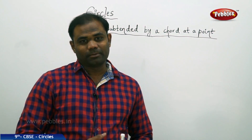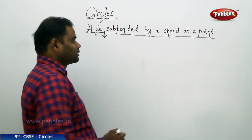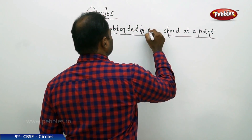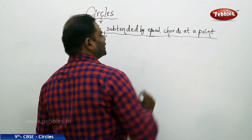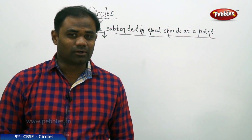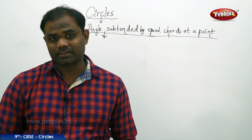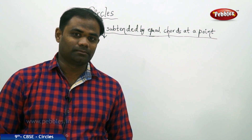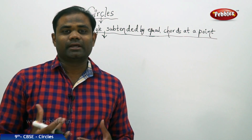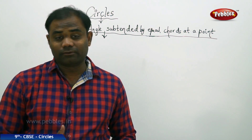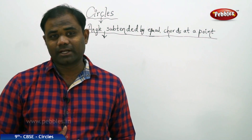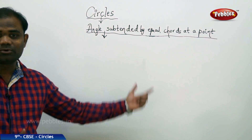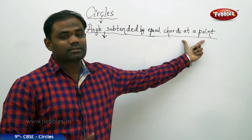Now that we have seen a property connecting angle subtended by equal chords at a point — that if two chords are of equal length, they subtend equal angles at the center of the circle — what would be the converse? Will the converse hold true? If two chords subtend equal angles at the center, will the chords be of equal length? Let us see the converse of this property.